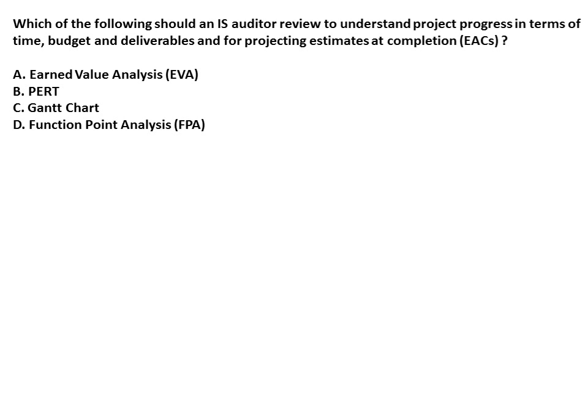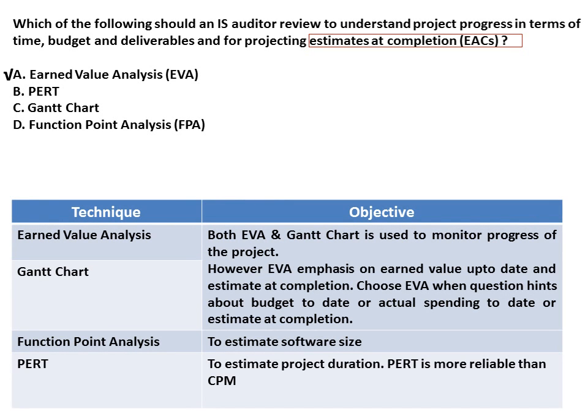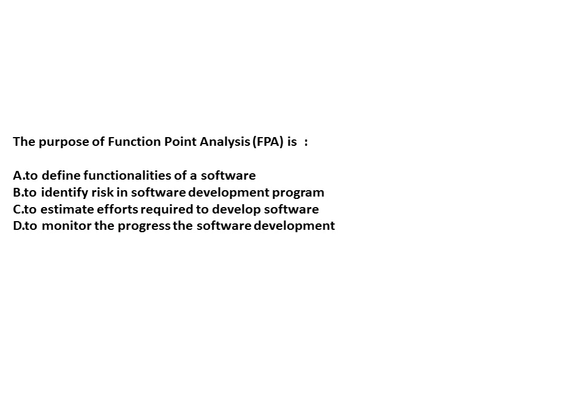Next question: Which of the following should an IS auditor review to understand project progress in terms of time, budget, deliverables, and for projecting estimated completion? Since specific metrics related to estimated completion are given, the answer should be Earned Value Analysis. Remember: both EVA and Gantt chart monitor project progress, but EVA emphasizes earned value up to date and estimated completion — choose EVA when the question hints about budget to date, actual spending to date, or estimated completion.